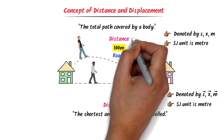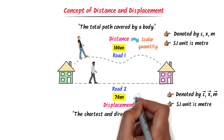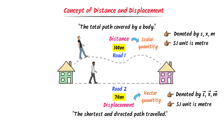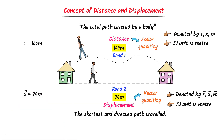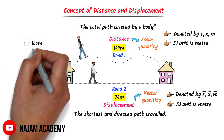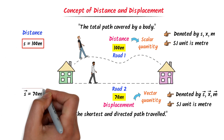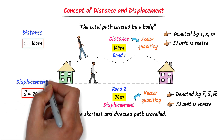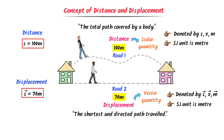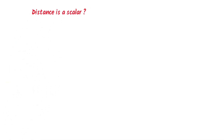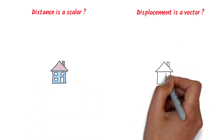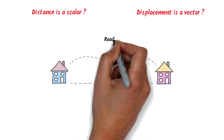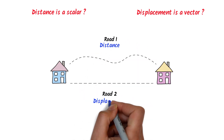Remember that distance is a scalar quantity and displacement is a vector quantity. For example, S = 100 m is a distance and S-arrow = 70 m is a displacement. Now let me teach you one important question: why is distance a scalar quantity and displacement a vector quantity? Consider the previous example — road one is distance and road two is displacement.